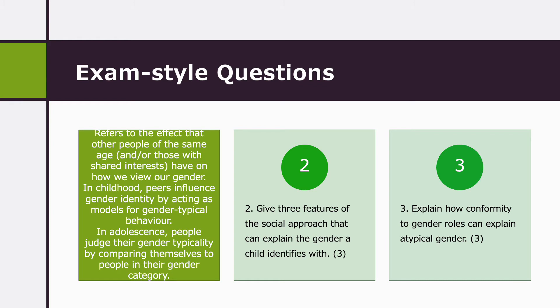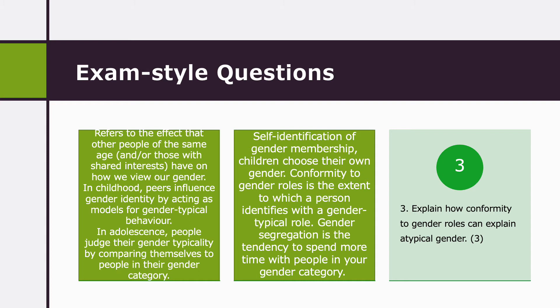Question two was: give three features of the social approach that can explain the gender a child identifies with. You could have talked about self-identification of gender membership — children choose their own gender. Conformity to gender roles — the extent to which a person identifies with a gender-typical role, so females acting as females, males acting as males. And gender segregation — the tendency to spend more time with people of your gender category.